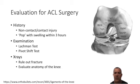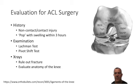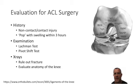The pivot shift is a more complicated maneuver, but it tests the rotational stability of the knee, which is important because the ACL is your primary restraint to rotation of the tibia relative to the femur. We put the leg straight, apply an axial load, and internally rotate the tibia. That pulls part of the tibia forward, and if you have an ACL tear, as we bend the knee, the tibia will slide back into place — that is the pivot shift.